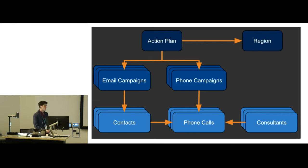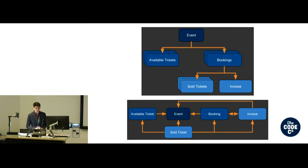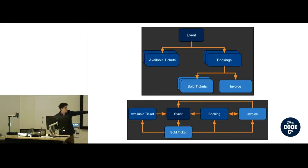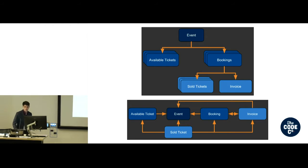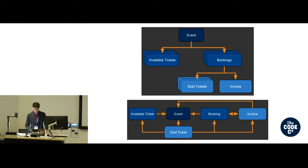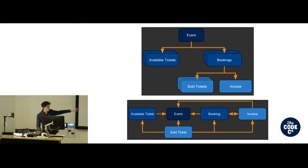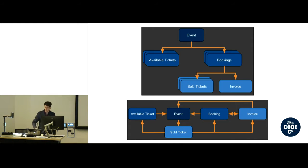For the following project — an event ticketing site — we got around this by deciding to have redundant meta values on each object so that we could quickly traverse the hierarchy. So each object stored connections to all related objects individually. The advantage was that if we had, say, a sold ticket, we could very quickly check its booking, its invoice, the event it was associated with, or even the ticket it was purchased from, without having to pull any additional information from the database.